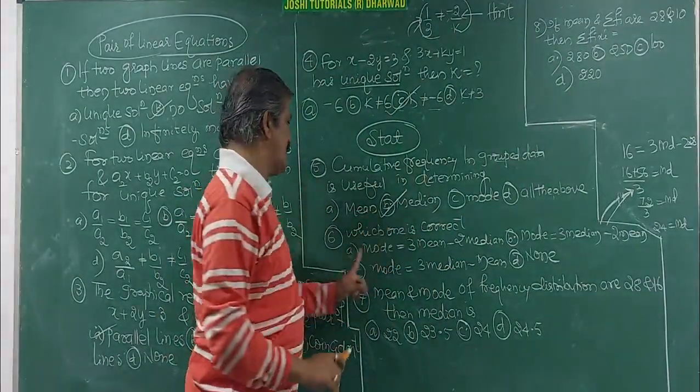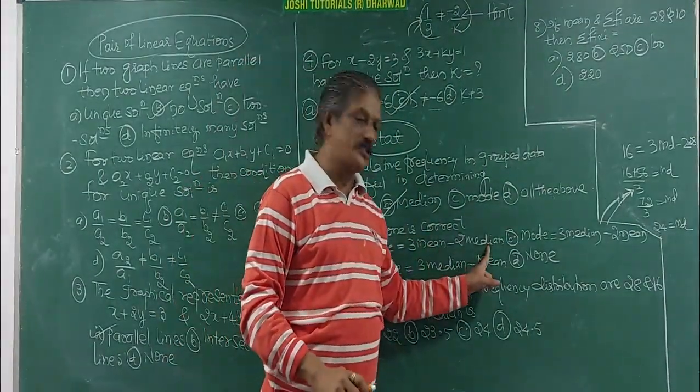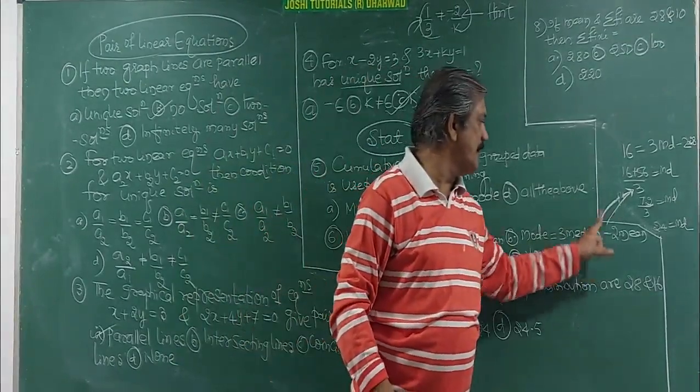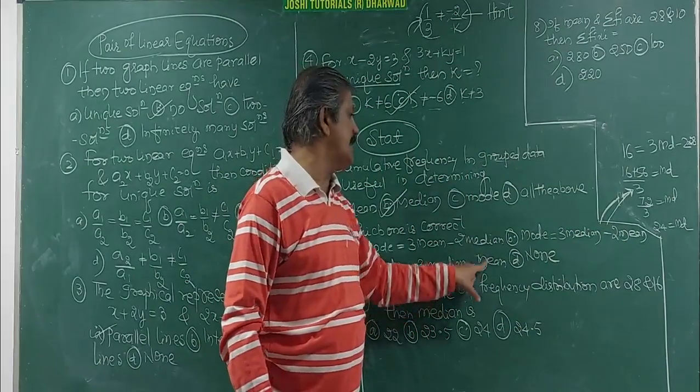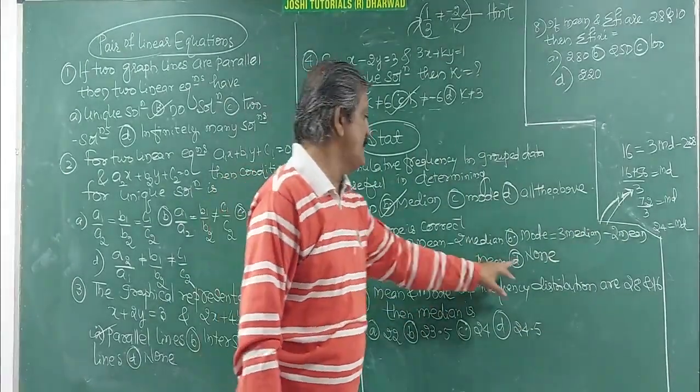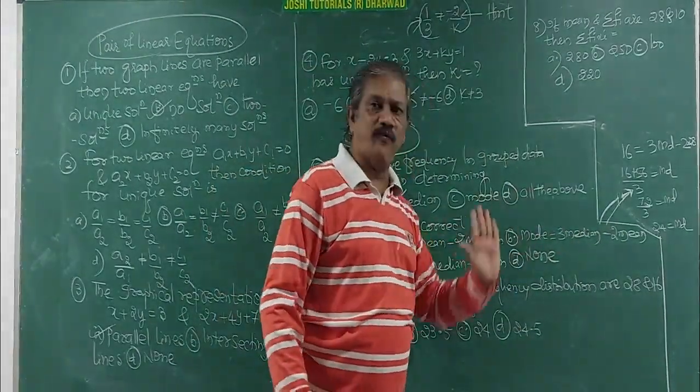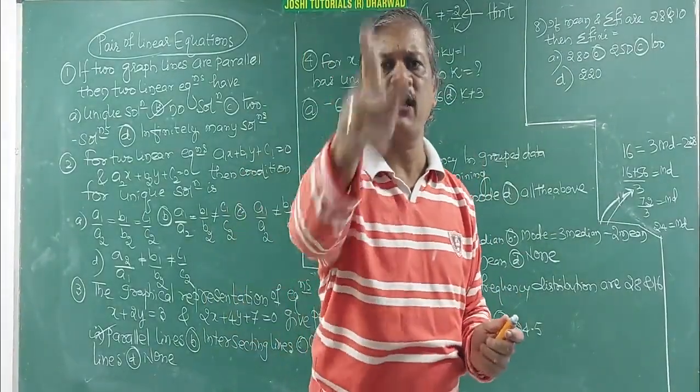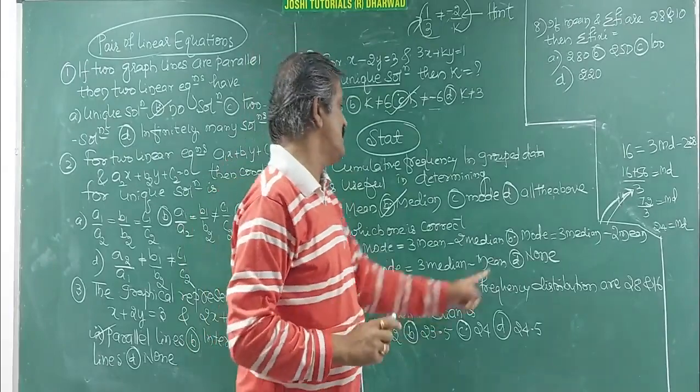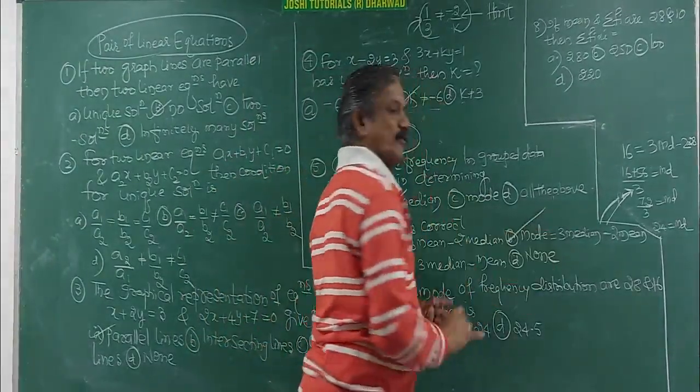And which one is correct? Mode equal to 3 mean minus 2 median. Mode equal to 3 median minus 2 mean. Mode equal to 3 median minus 1 mean. And D is none of these. All first 3 are confusing. You must be again particular, specific. That is, answer is B.